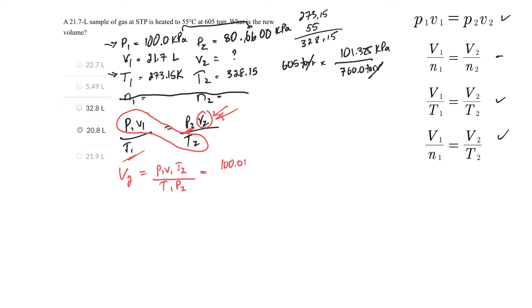100 kilopascals, volume 1, 21.7 liters, times T2, temperature 2, 328.15 Kelvin. That was Kelvin. I converted that, right? Yep. Divided by T1. That was our STP. That's 273.15 Kelvin,